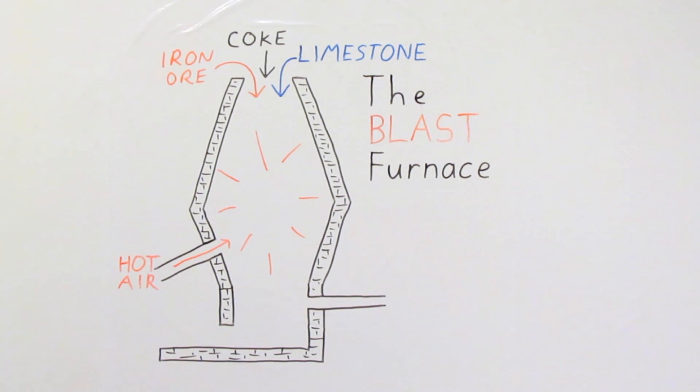The hot molten iron which is produced is the densest thing inside the blast furnace and so it sinks to the bottom. Any impurities will float on the top of this molten iron. We call these impurities slag.